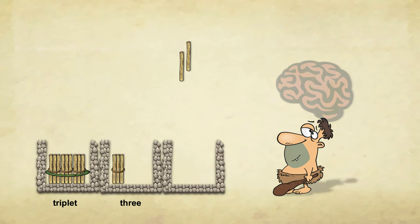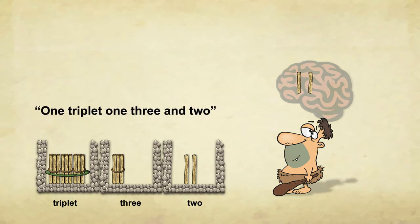Say we end up with this. How would we call it? 1 triplet, 1, 3 and 2. If you have doubt, think about how you would say this number.